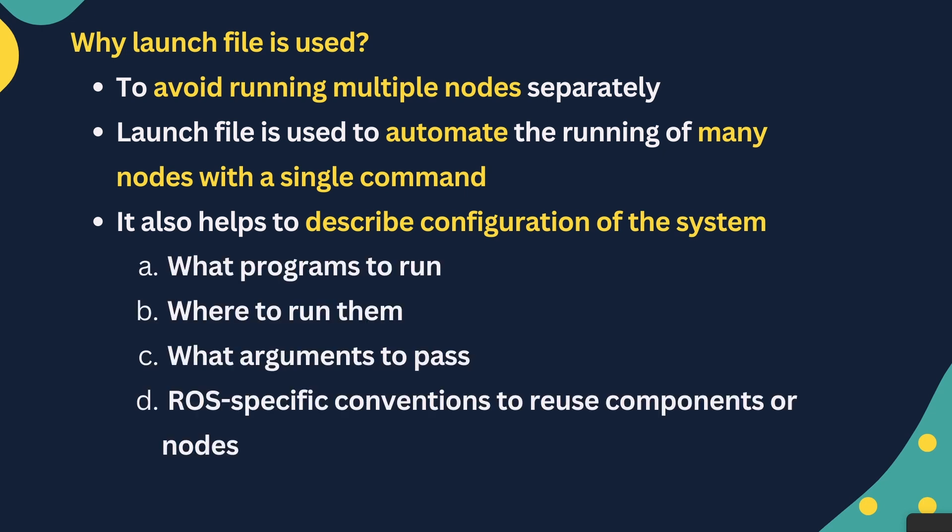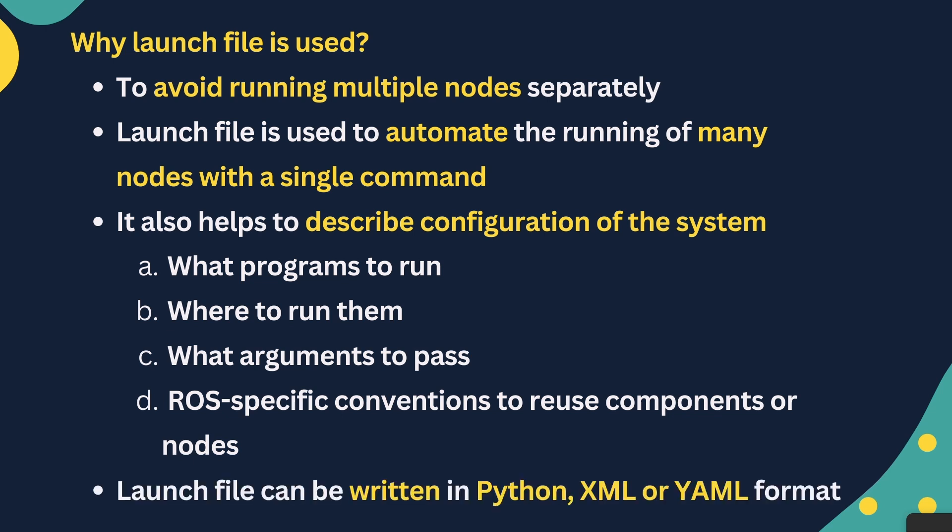Besides that, it also gives you the benefits of describing the configuration of the system. With configuration, you can tell what programs to run, where to run those programs — either on different machines or different processes — and what arguments to pass to any of the nodes. The fourth benefit is ROS-specific conventions so that we can reuse components or nodes by giving different arguments.